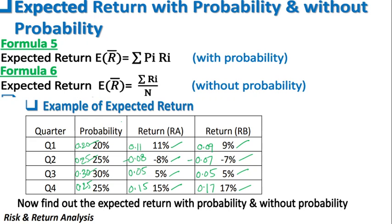But in certain cases, if you have not included the probability into the expected return, we will see what result we get. Let us see the formula for the expected return. The formula when probability is included: E(R̄) = Σ Pi × Ri. Here, R̄ is nothing but the arithmetic mean of returns, which equals the summation of probability multiplied with the returns. Another formula without probability: E(R̄) = Σ Ri / N.